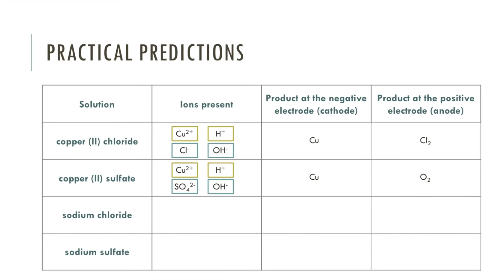For sodium chloride dissolved in water, we have Na⁺ and Cl⁻ ions, plus H⁺ and OH⁻. At the negative electrode we have a choice between Na⁺ and H⁺ — hydrogen is less reactive than sodium, so hydrogen gas is formed. At the positive electrode we have a choice between Cl⁻ and OH⁻; because there is a halide ion present, we get the halogen, which is Cl₂.